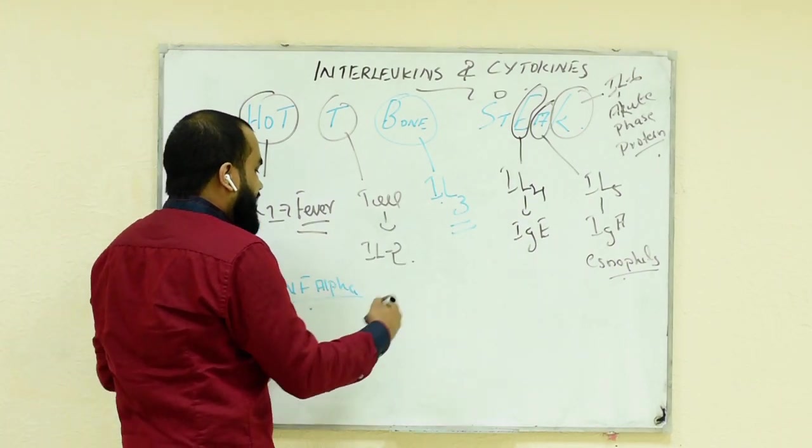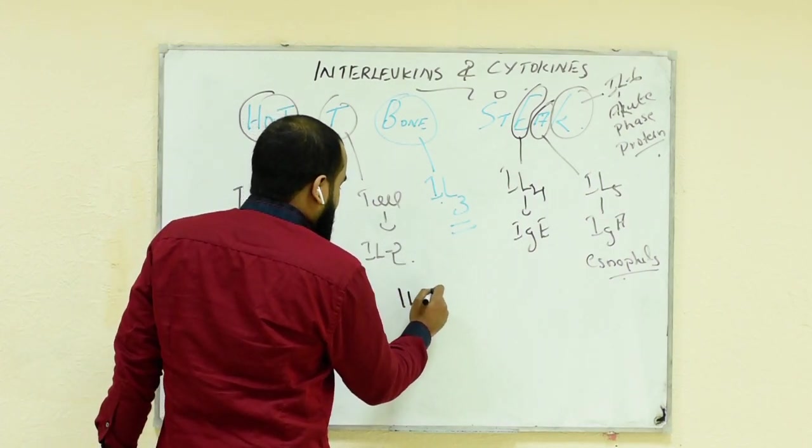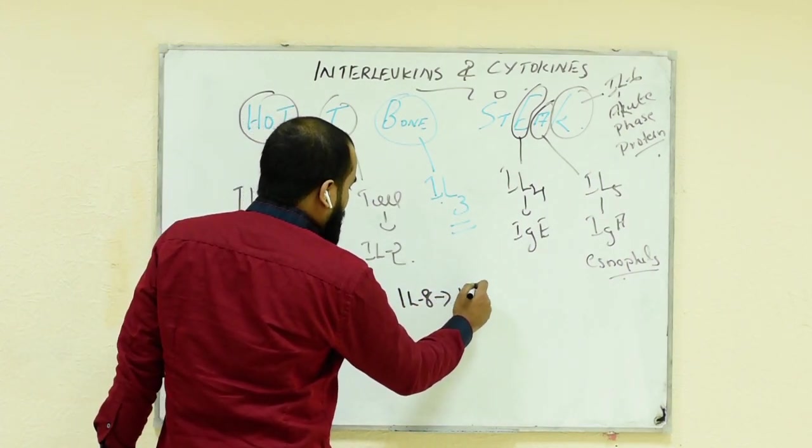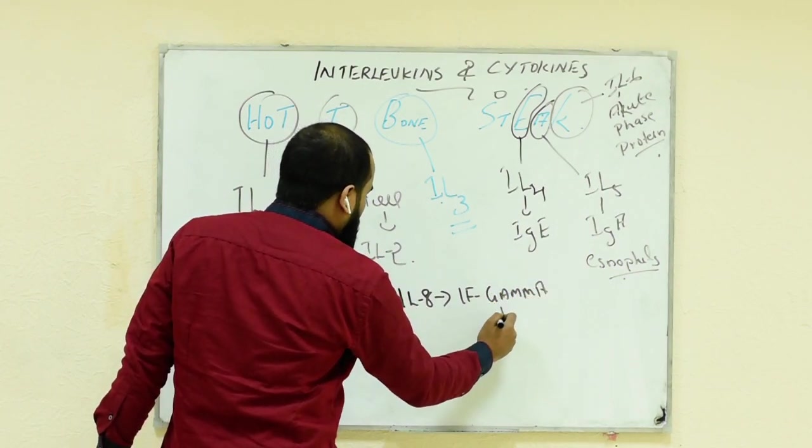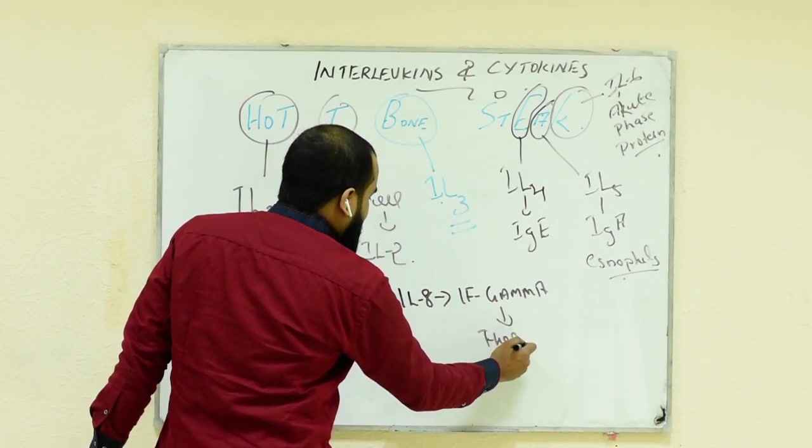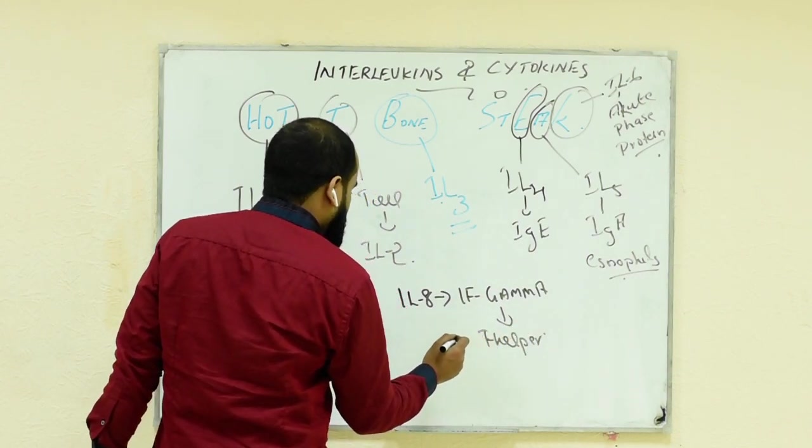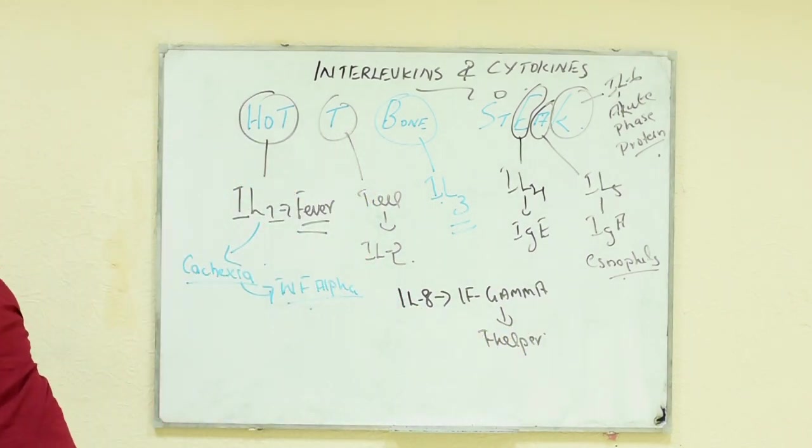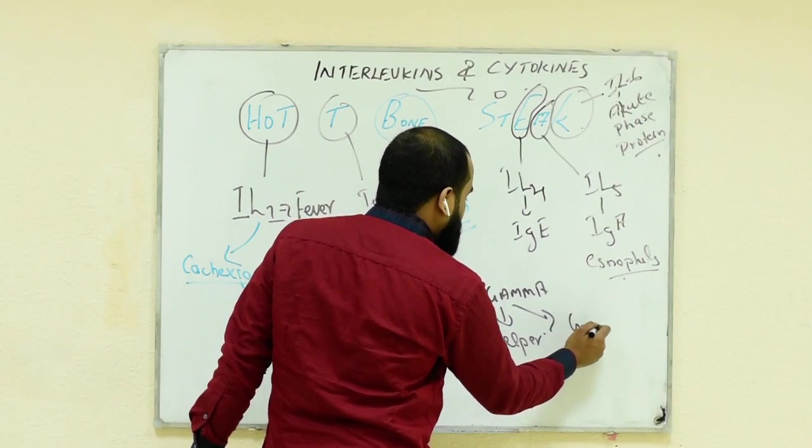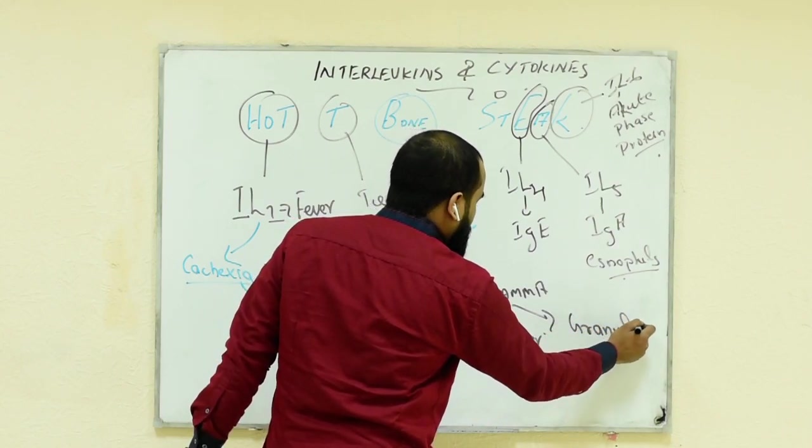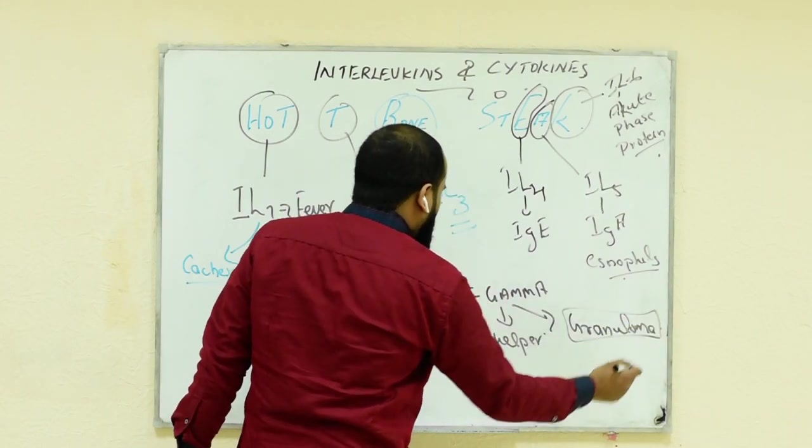And I want to add here, sorry not interleukin 8. I was talking about the cytokine interferon gamma. Interferon gamma controls T helper cells as well as granuloma, you know, granuloma in TB.